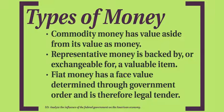Types of money: commodity money has value aside from its value as money. For example, gold coins would be commodity money because they're made of gold, which is very valuable, so it has value apart from being used as money. Representative money is backed by or exchangeable for a valuable item. For a long time, the United States was on the gold standard, which meant our money was exchangeable for gold only. Today, most currencies in the world are fiat money — fiat money has a face value determined through government order and is therefore legal tender. Our money today is no longer tied to the gold standard; it has value because the government says it does.